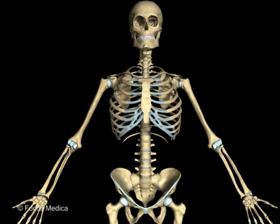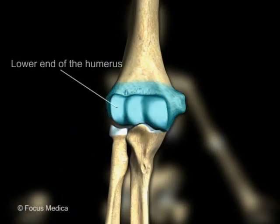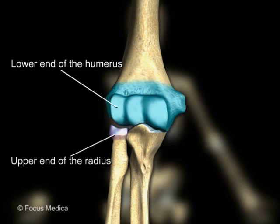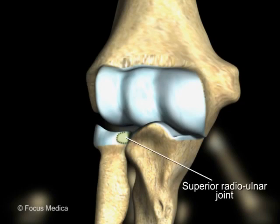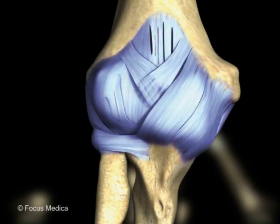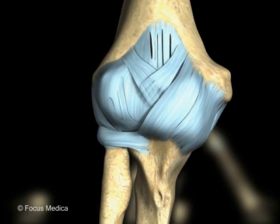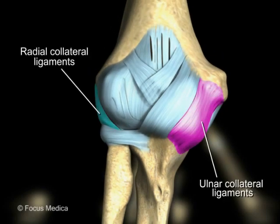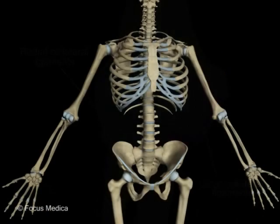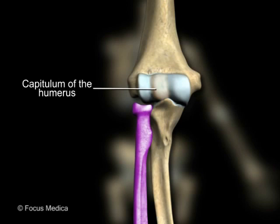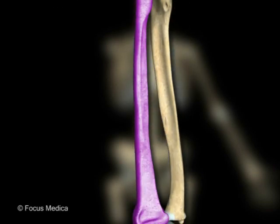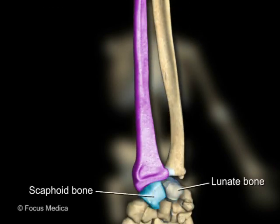The elbow joint is a synovial hinge joint between the lower end of the humerus and the upper ends of the radius and ulna. It communicates with the superior radio-ulnar joint, is surrounded by a fibrous capsule, and stabilized by ulnar and radial collateral ligaments. The radius is the lateral bone of the forearm that articulates with the capitulum of the humerus above and the scaphoid and lunate bones below.